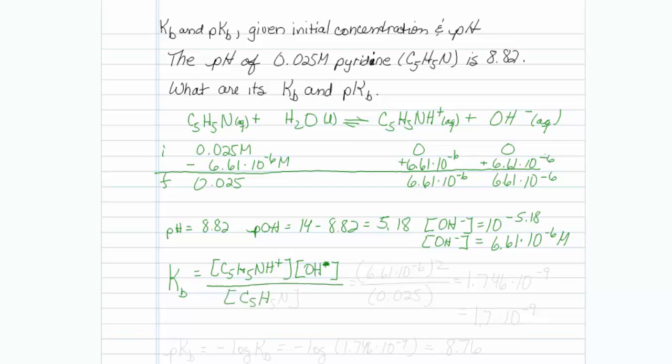So that would be 6.61 times 10 to the minus 6, and I'll just square that since both of those are that concentration. And my initial concentration, even after subtracting this value, is 0.025.